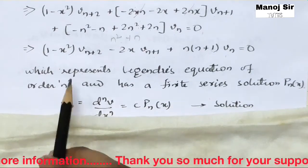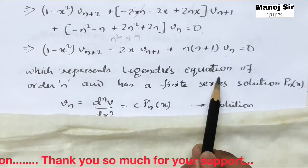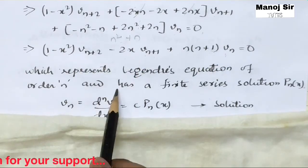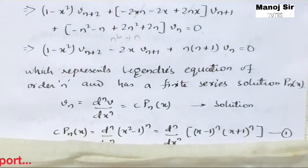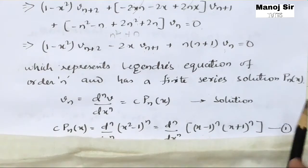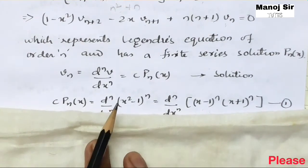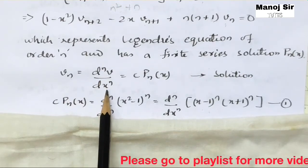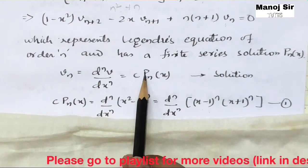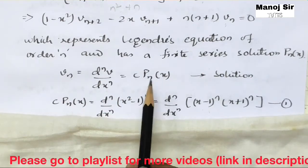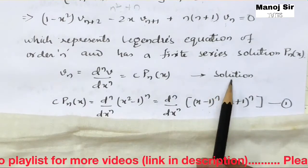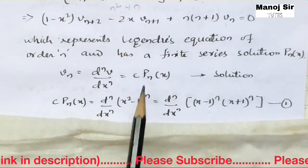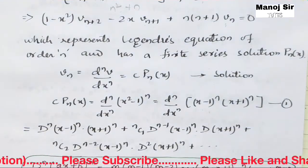This equation represents Legendre's equation of order n, which has a finite series solution Pn(x). So we can say Vn — the n-th derivative of V with respect to x — can be written as C·Pn(x). This is the solution of Legendre's equation.